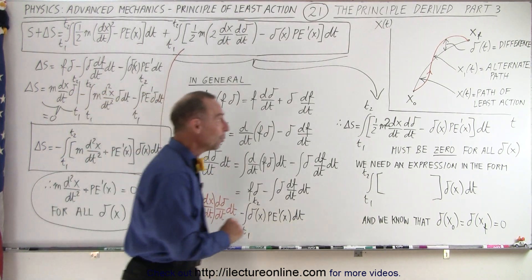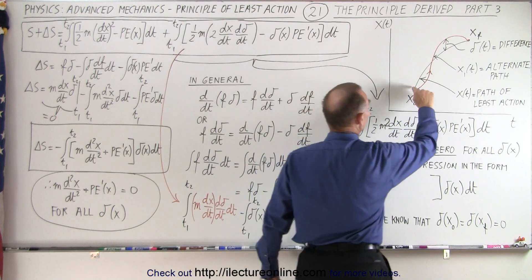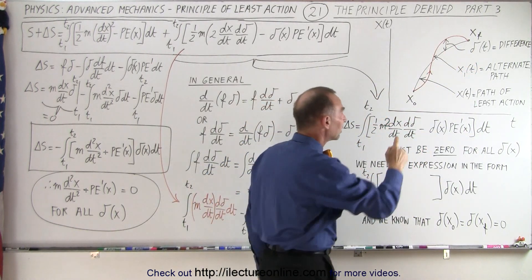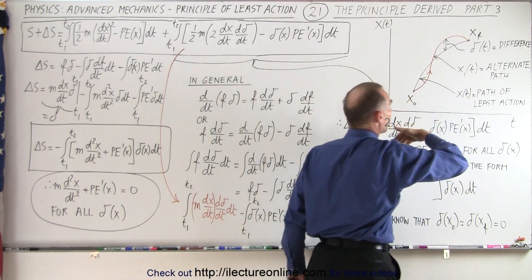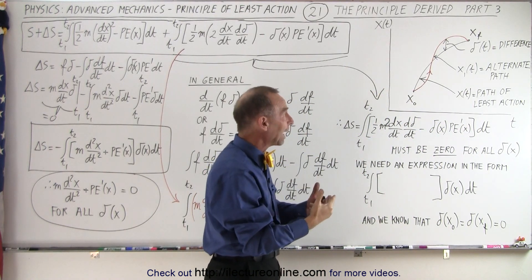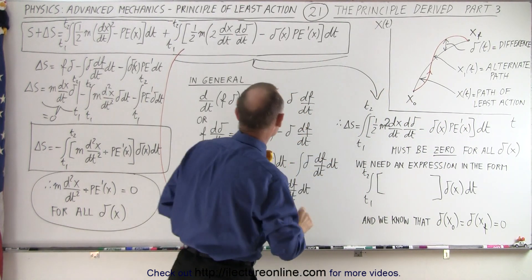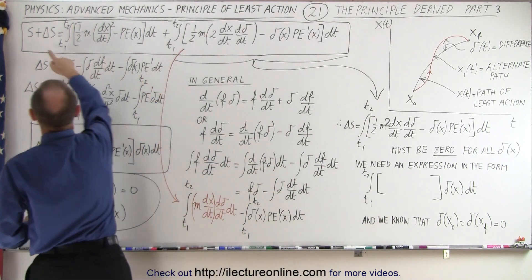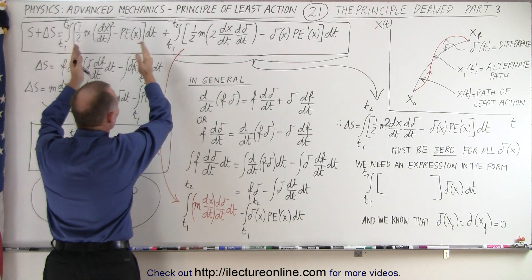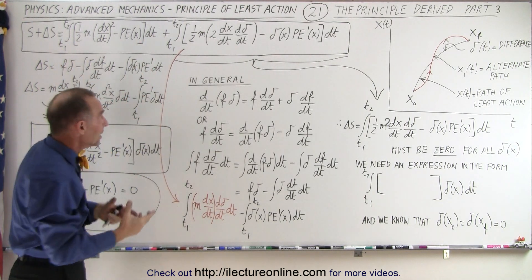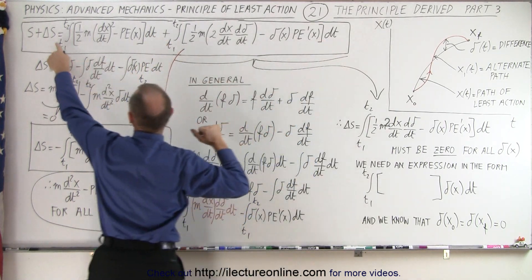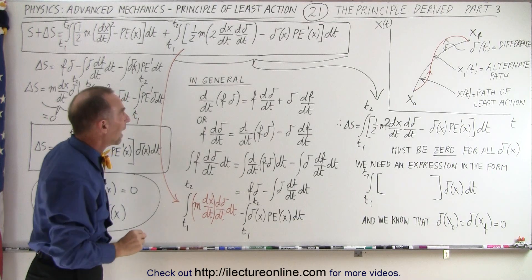In the previous video, we had a path which represented the path of least action. We realized that if we took a different path that would slightly differ, and calculated the action of that new alternate path, we'd get something slightly larger. We expressed that as S plus delta S — S being the action of the original path presumed to be the path of least action, and delta S being the additional term from deviating slightly from that original path.